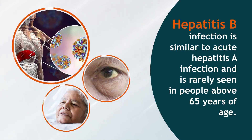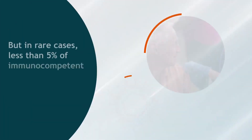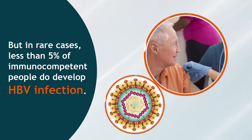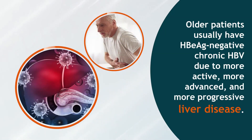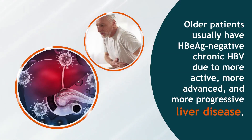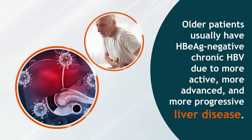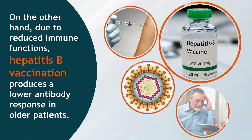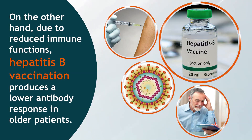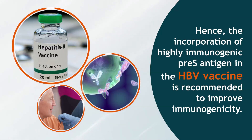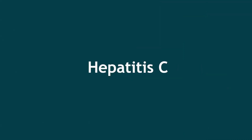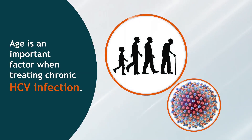Hepatitis B: Hepatitis B infection is similar to acute hepatitis A infection and is rarely seen in people above 65 years of age, but in rare cases, less than five percent of immunocompetent people do develop HBV infection. Older patients usually have HBeAg-negative chronic HBV due to more active, more advanced, and more progressive liver disease. Due to reduced immune functions, hepatitis B vaccination produces a lower antibody response in older patients. Hence, the incorporation of highly immunogenic pre-S antigen in the HBV vaccine is recommended to improve immunogenicity.